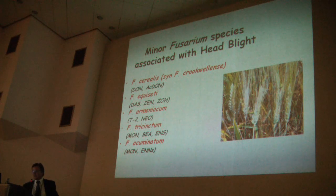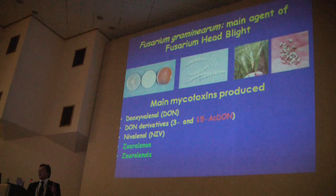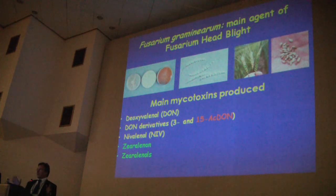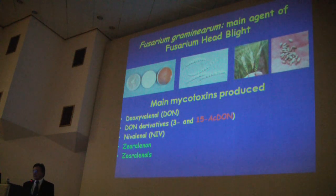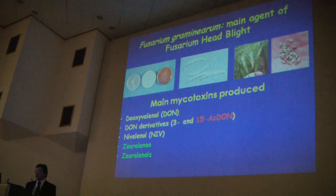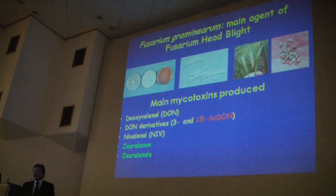The main agent of Fusarium Head Blight, which is considered the most aggressive species, can produce deoxynivalenol and its derivatives — 3-acetyl deoxynivalenol and 15-acetyl deoxynivalenol — and can also produce nivalenol, and zearalenone and zearalenol.